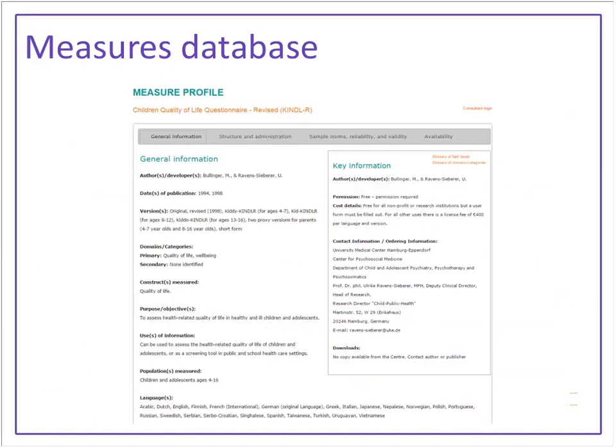When you pull up results, any measure with a PDF icon beside it is available free with a PDF copy of the measure or manual you can download right away. When you look into an individual profile, you get all information in one spot: general information about the measure and available languages. The structure and administration tab covers number of questions and whether you need technical qualifications to score it. There's a tab on all psychometric information including reliability, validity, and normative sample, plus availability and cost information.